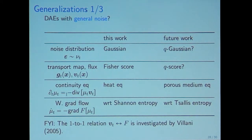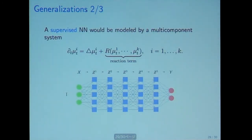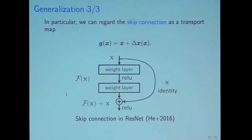The generalizations will be, for example, we use Gaussian today, but in future we can use q-Gaussian. This is related to porous medium equation. This is denoising autoencoder case. For supervised case, I think this will be modeled by a multi-component system, like water and oil. In particular, we can regard the skip connection in the residual network. This would be a transport map.